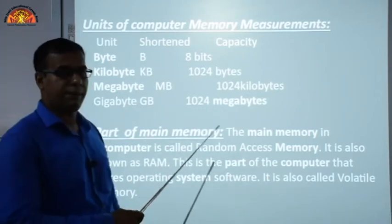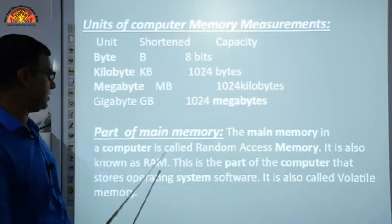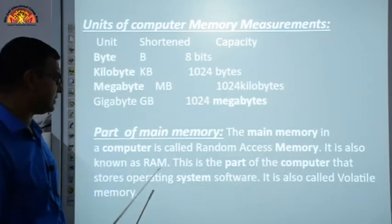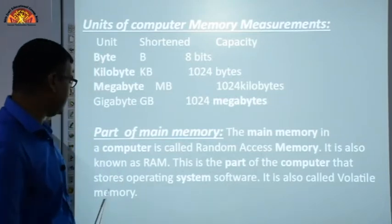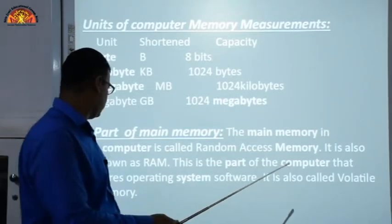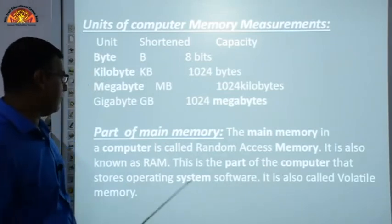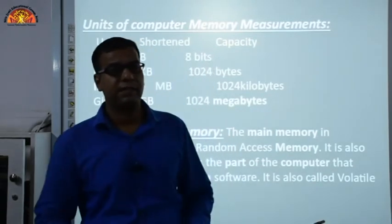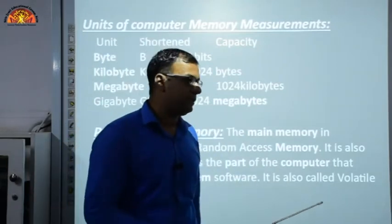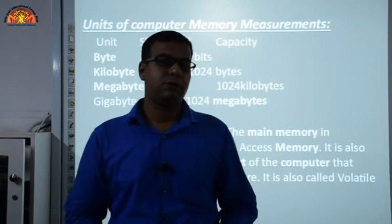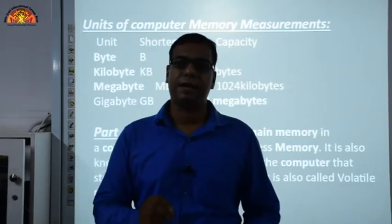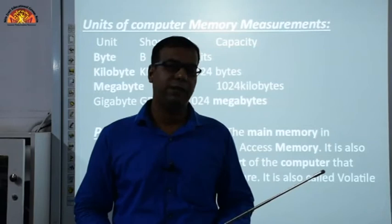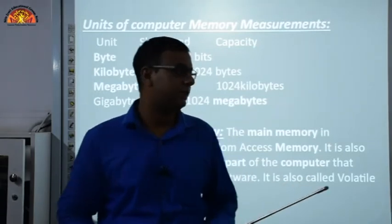The main memory of a computer is called RAM — Random Access Memory. RAM stores the operating system software and is also called volatile memory. Volatile memory means not permanent storage. Data stored in RAM is only temporarily stored. When you close a software or finish your work, the data in RAM is lost if you have not saved it to secondary memory.